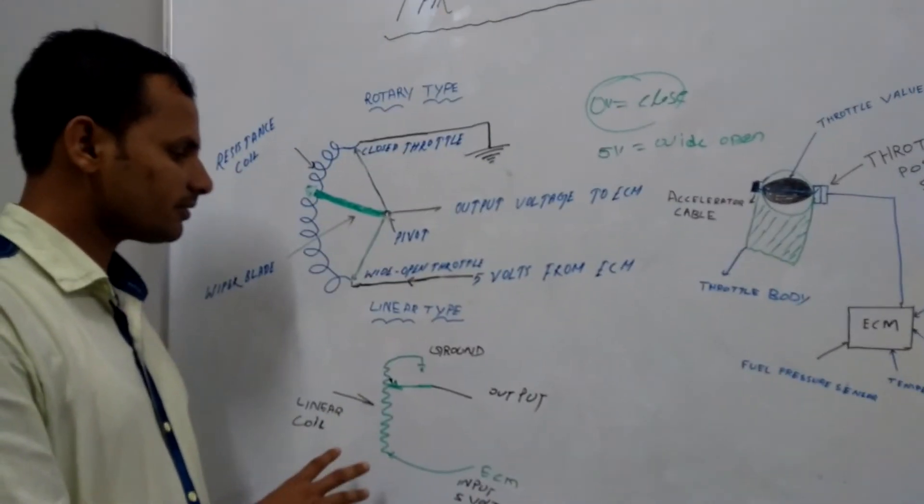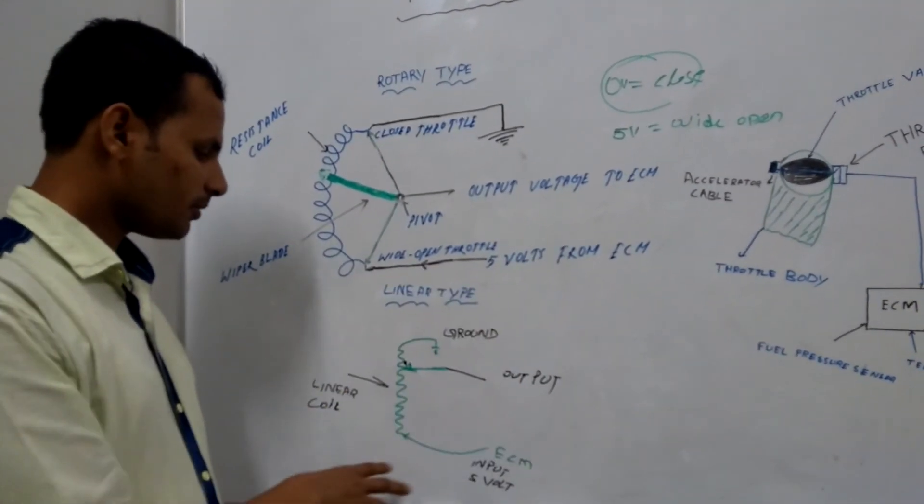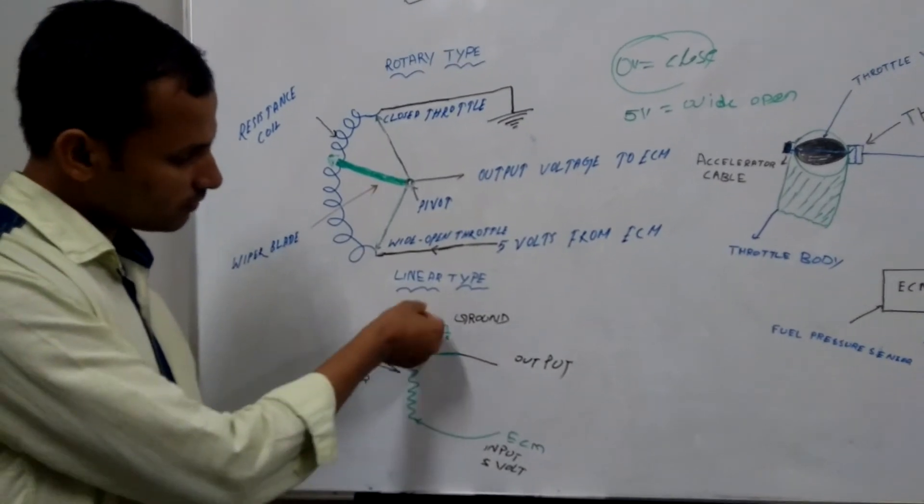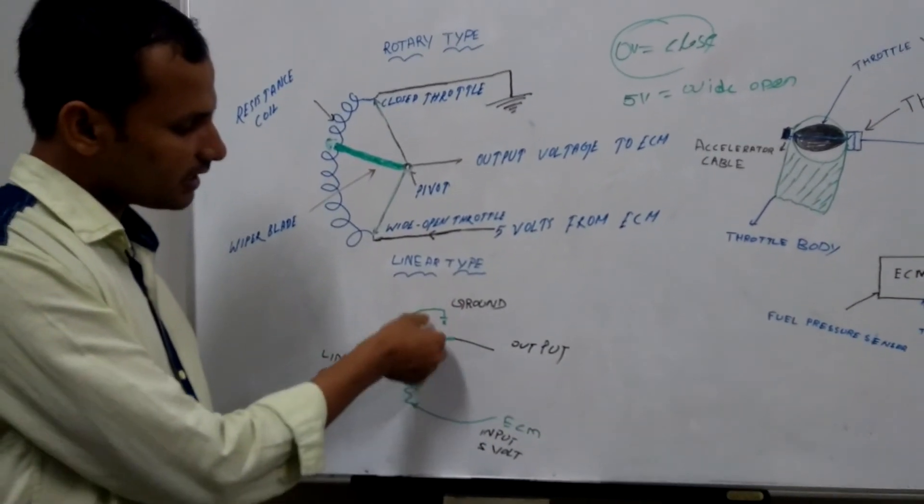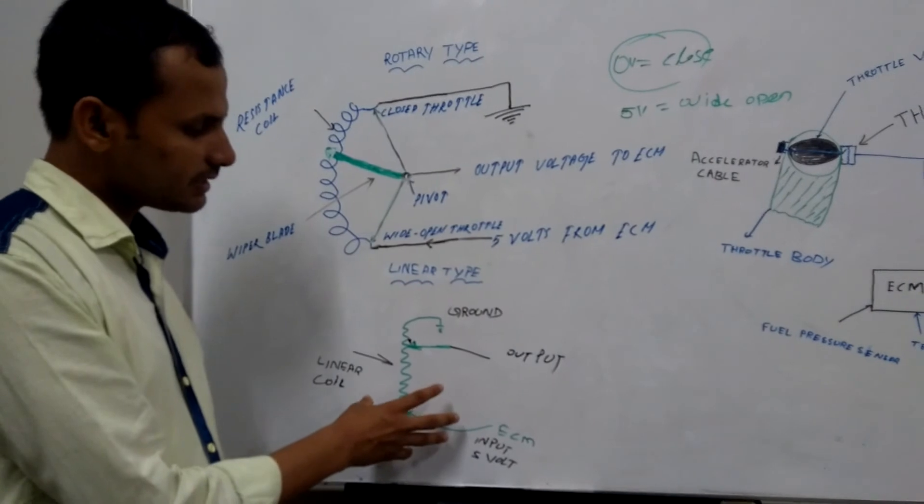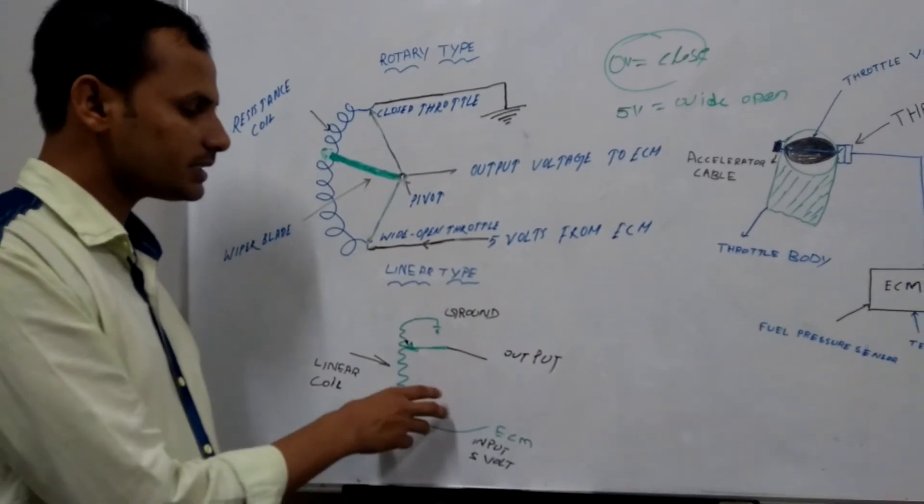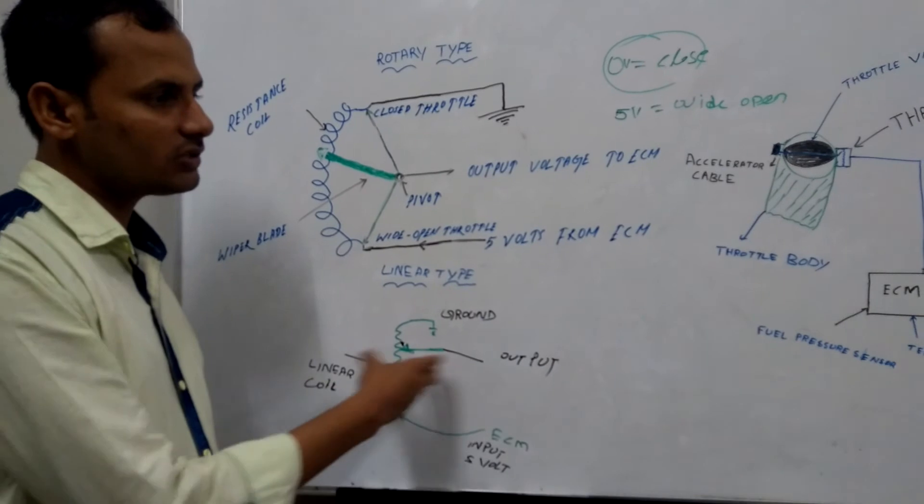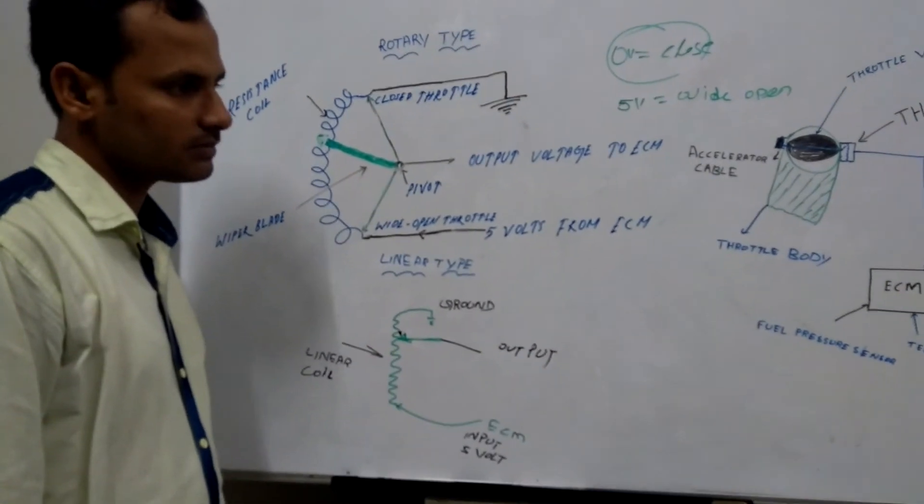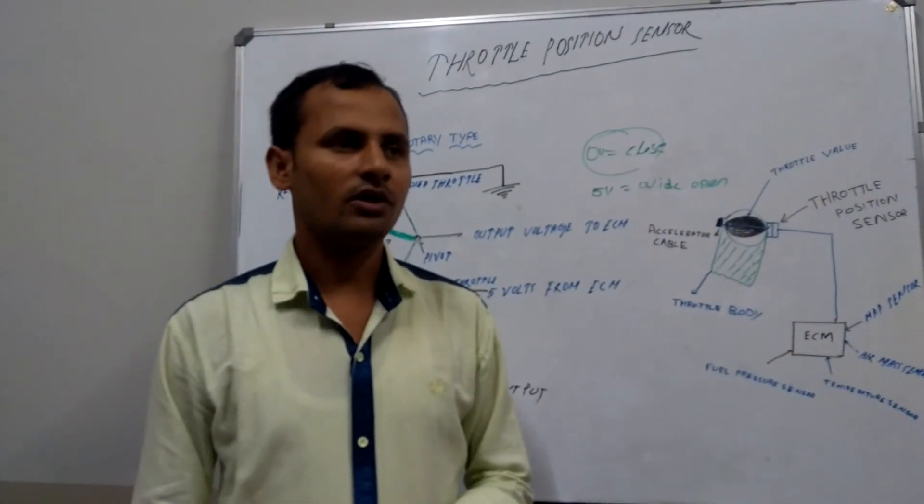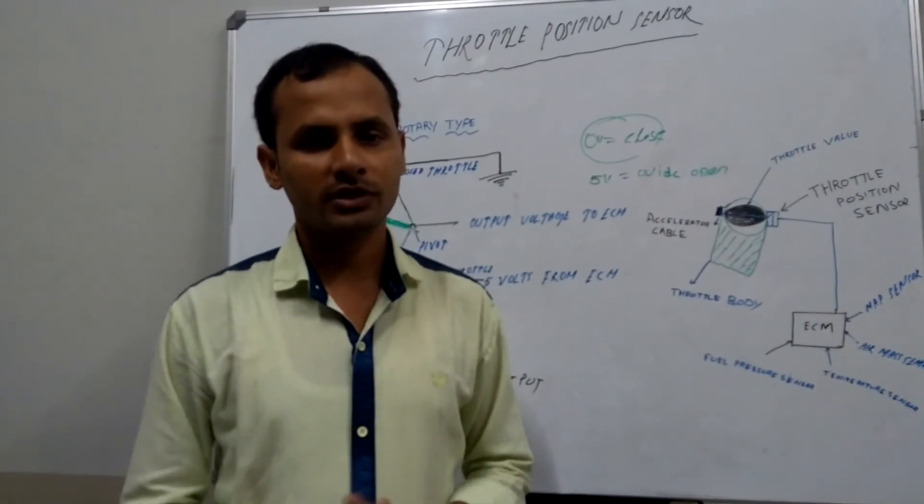In a linear type throttle position sensor, the blade moves across the coil in a linear motion and senses the signal or voltage output and delivers it to the ECM. This is all about the throttle position sensor.